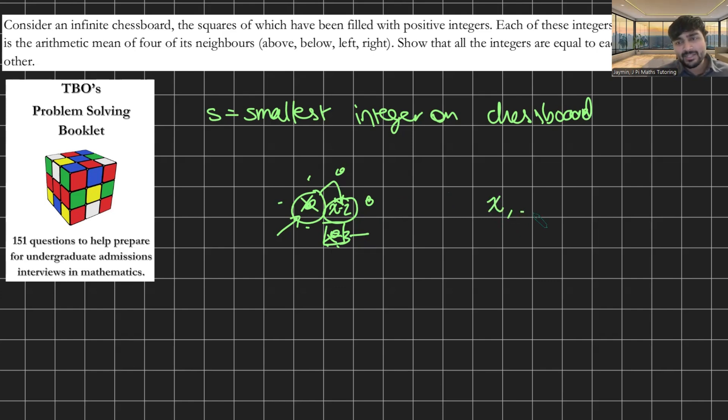So you started from X and you're getting a sequence of decreasing numbers, but eventually you're going to have to hit one or break this sequence because you're decreasing from a positive integer. Eventually, because each of these terms in the sequence is a positive integer, after at most X terms, you're going to have hit zero or the negative numbers, which is a contradiction. And hence, again, it's not possible. So all these terms on the chessboard must be the same.